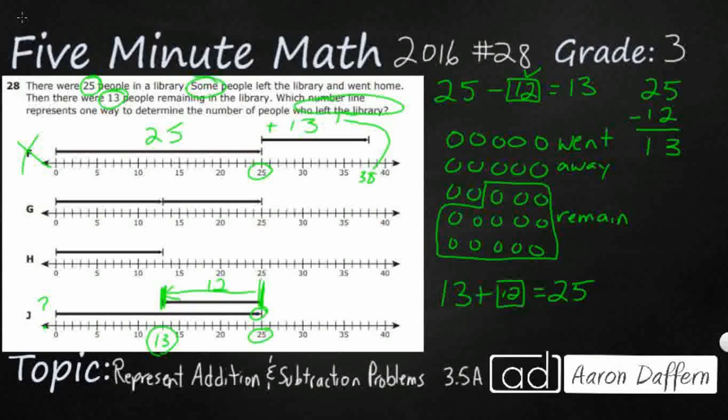Let's see about G. G starts just at 13 and then they add 12 to get up to 25. So when you add 12 to get up to 25, well, that could work, but it doesn't represent this number sentence because what we need to do is we need to start all the way up at 25 and then move back. So that's actually pretty close, but that's not going to show what we need here.